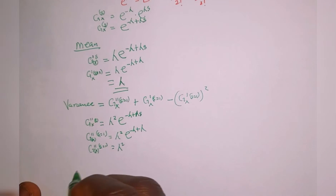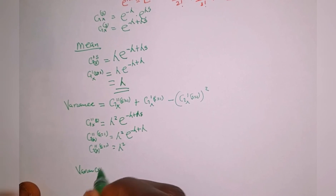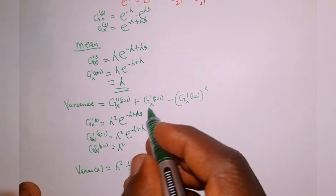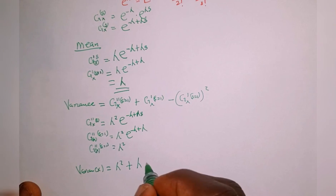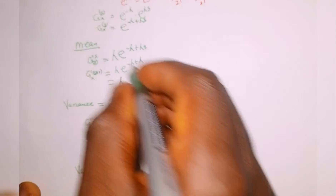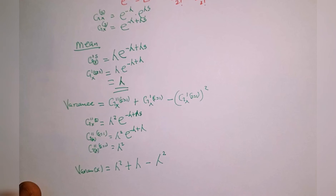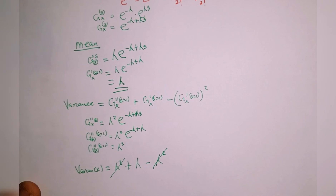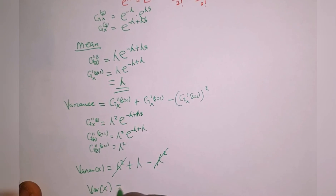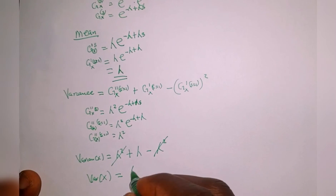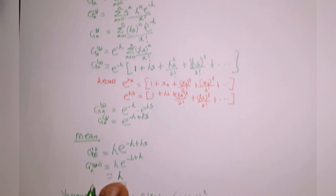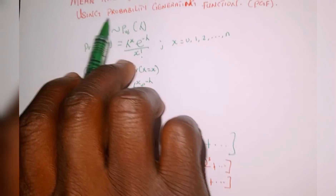Now we find the variance. The variance of X equals the second derivative at s equal to 1, which is lambda squared, plus the first derivative at s equal to 1, which is lambda, minus the square of the first derivative at s equal to 1, which is lambda squared. The positive lambda squared and negative lambda squared cancel, so the variance of X equals lambda.